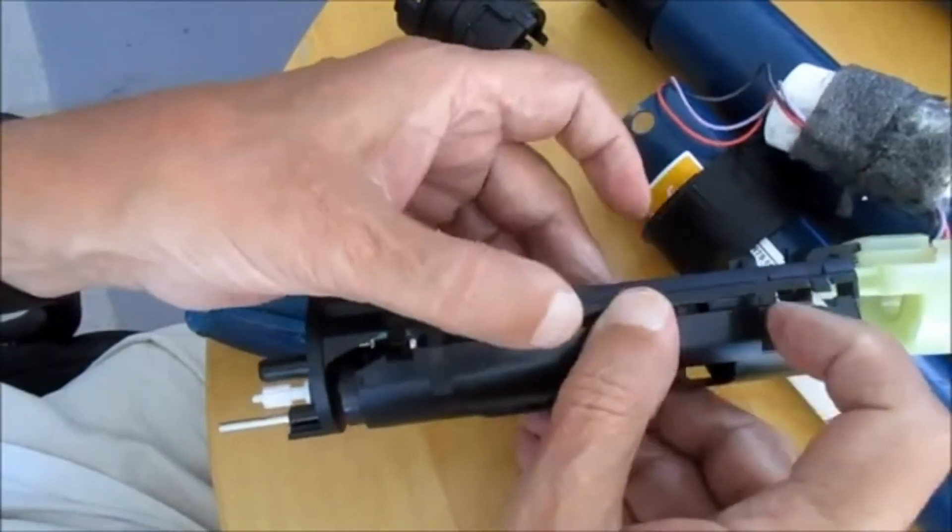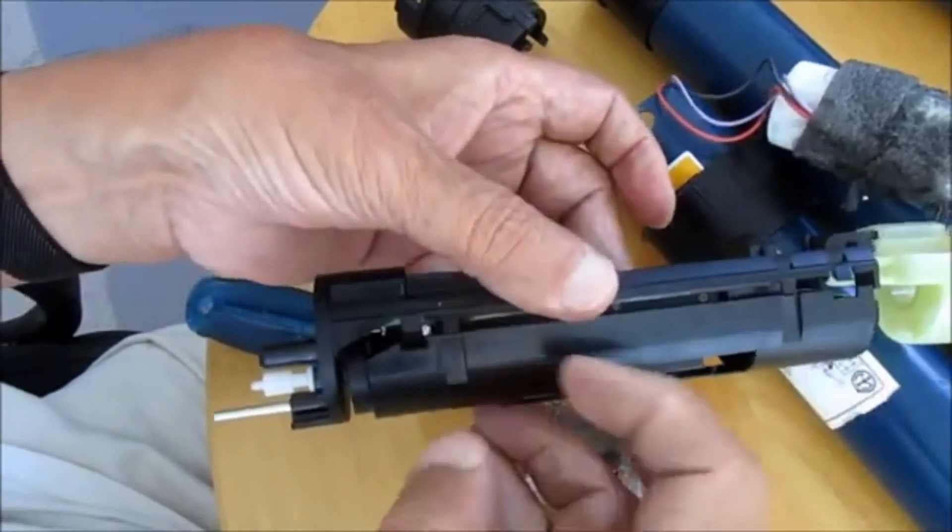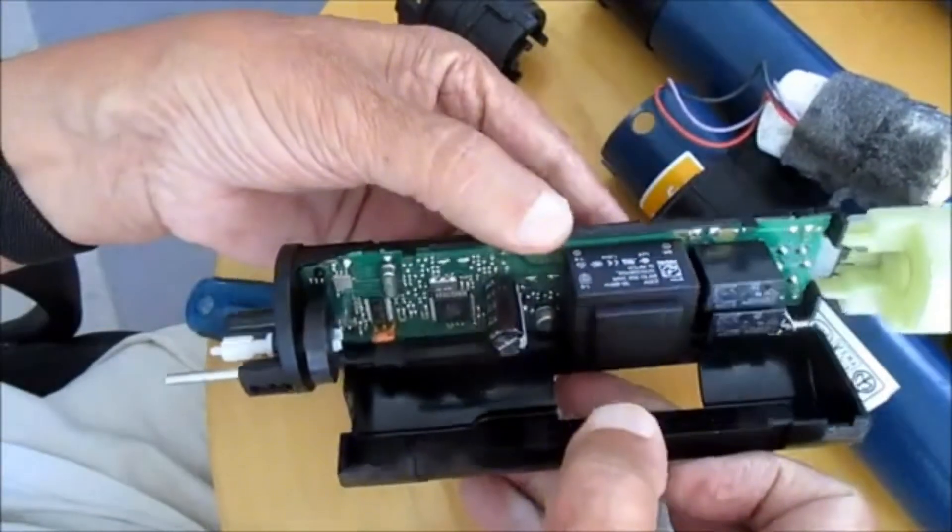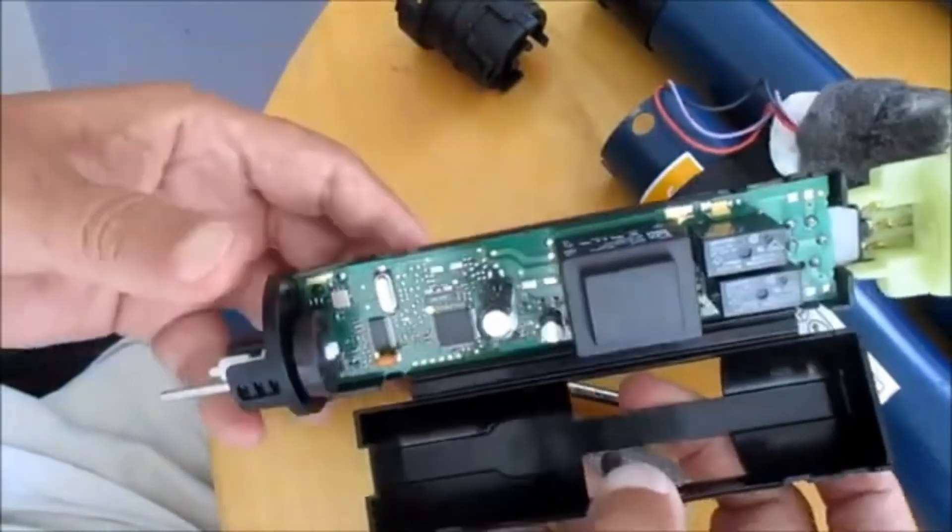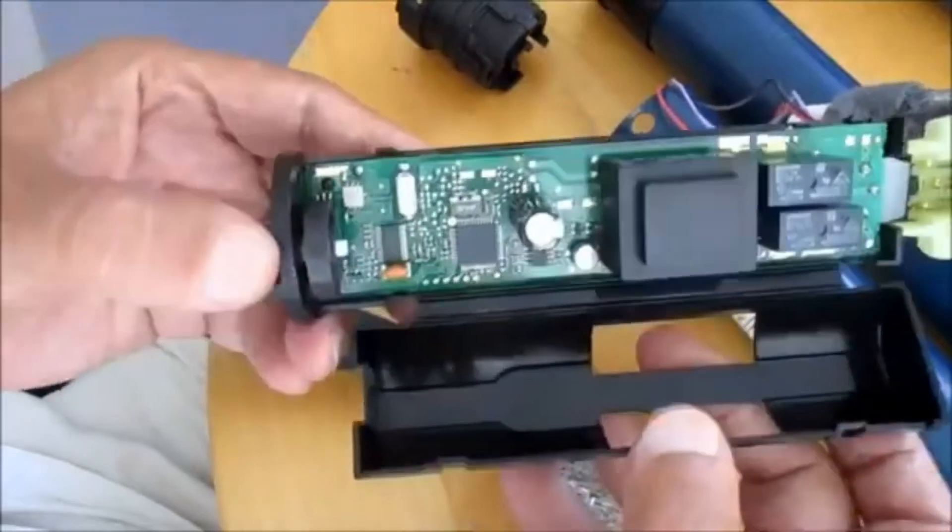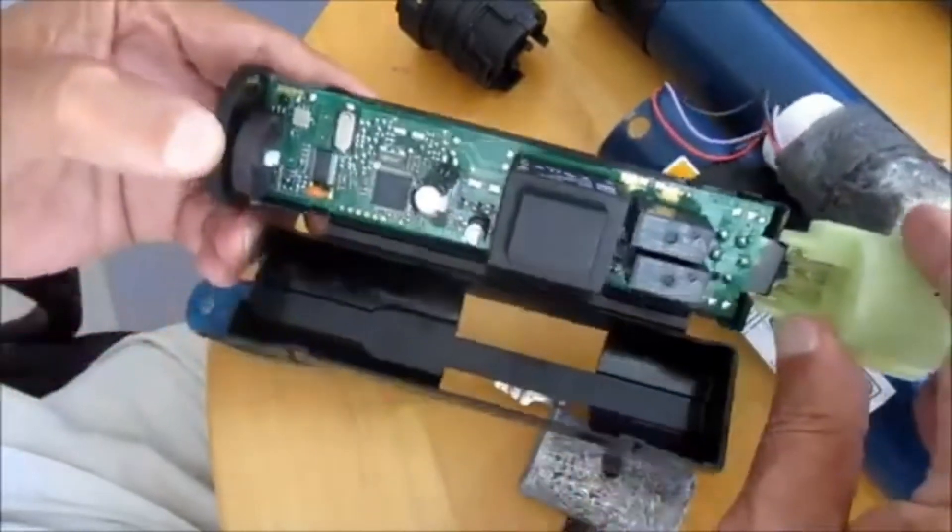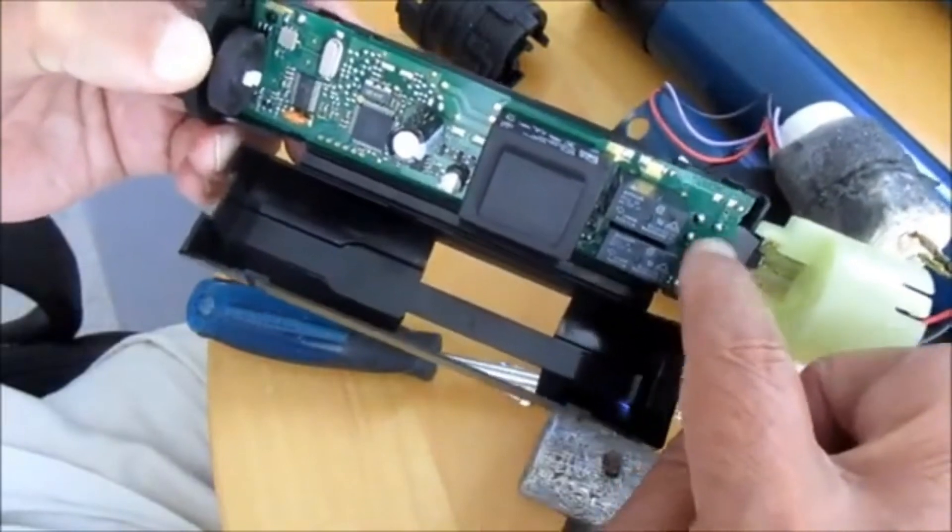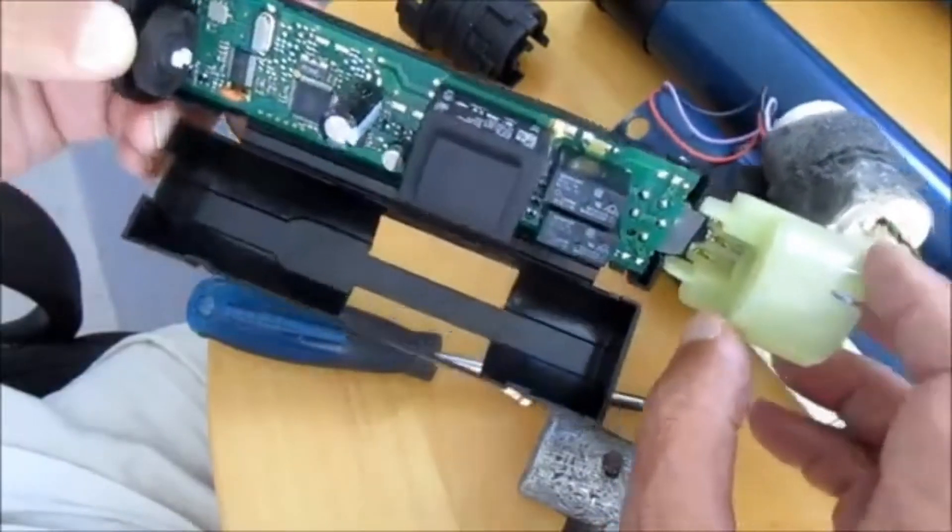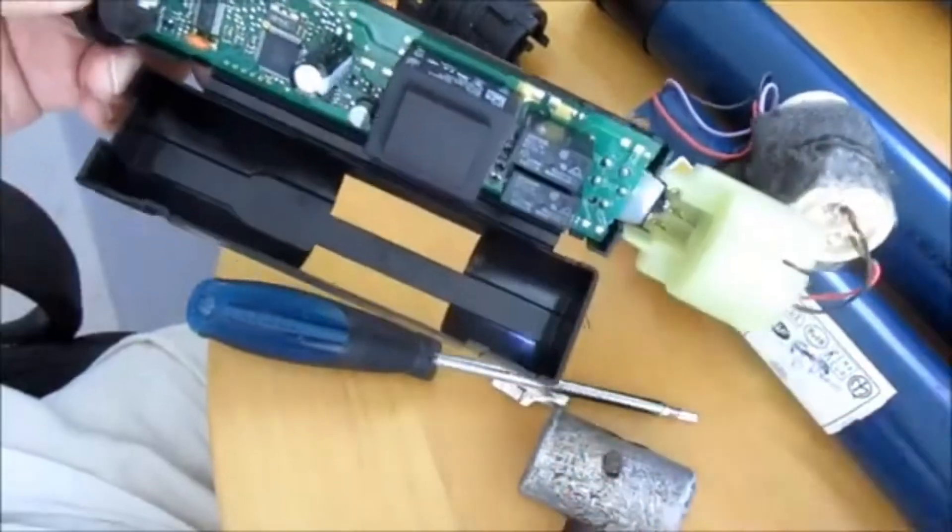So here we go, there's two little clips, one here and one here, and that is what holds the cover over the electronic circuit board, the printed circuit board. That's the board, but unfortunately the board cannot be removed anymore because you have to unsolder those terminals. They are the connections to the power supply and to the motor which is further down.